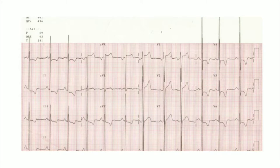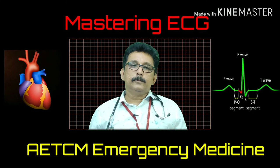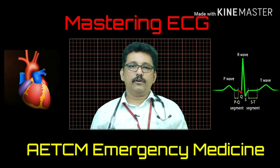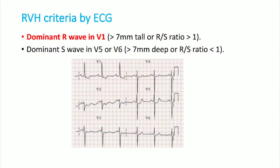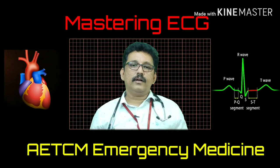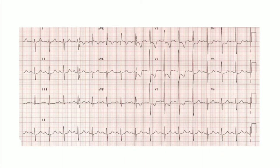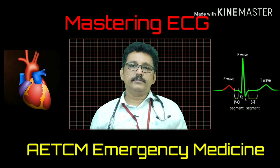An ECG showing a deep S wave in V1 and large R wave in V6, with ST depression and T wave inversion, indicates left ventricular hypertrophy with strain pattern. For right ventricular hypertrophy (RVH), the criteria include a dominant R wave in V1 greater than 7 millimeters tall, or an R to S ratio more than 1 in V1, along with a dominant S wave in V5/V6. Tall R waves in V1 with ST depression and T inversion in V1-V3 indicate RVH.